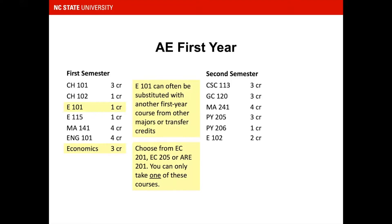For the Economics requirement, you can choose from one of three courses: EC 201, EC 205, or ARE 201. Only one of these courses can be used to satisfy degree requirements.